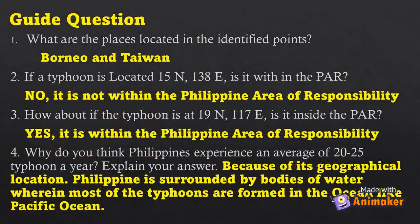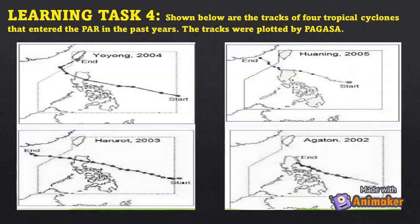Guide questions: One — What are the places located at the identified points? Answer: Borneo and Taiwan. Two — If a typhoon is located at 15°N, 138°E, is it within the PAR? Answer: No, it is not within the Philippine Area of Responsibility. Three — How about if the typhoon is at 19°N, 117°E? Answer: Yes, it is within the Philippine Area of Responsibility. Four — Why do the Philippines experience an average of 20 to 25 typhoons a year? Answer: Because of its geographical location — the Philippines is surrounded by bodies of water where most typhoons form, like the Pacific Ocean.